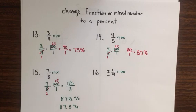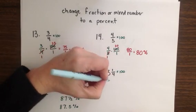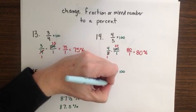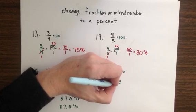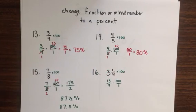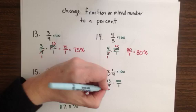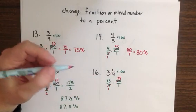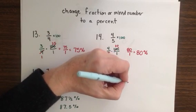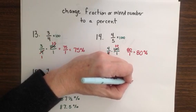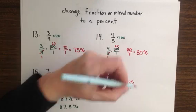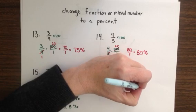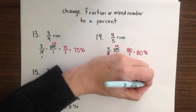To do the multiplication with the mixed numbers, I first need to turn this into an improper fraction. 13 fourths times 100 once. Then I reduce by a factor of 4, and then multiply. 13 times 25 is 325 over 1 or 325%.